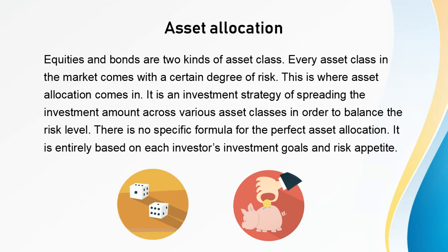Every asset class in the market comes with a certain degree of risk. This is where asset allocation comes in. It is an investment strategy of spreading the investment amount across various asset classes in order to balance the risk level. There is no specific formula for the perfect asset allocation; it is entirely based on each investor's investment goals and risk appetite.